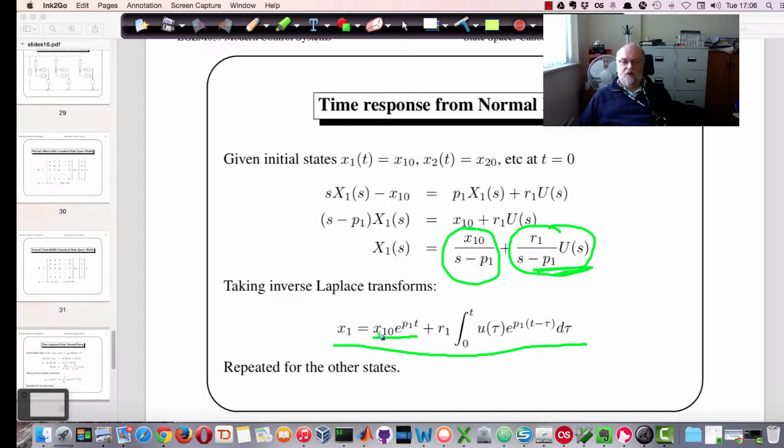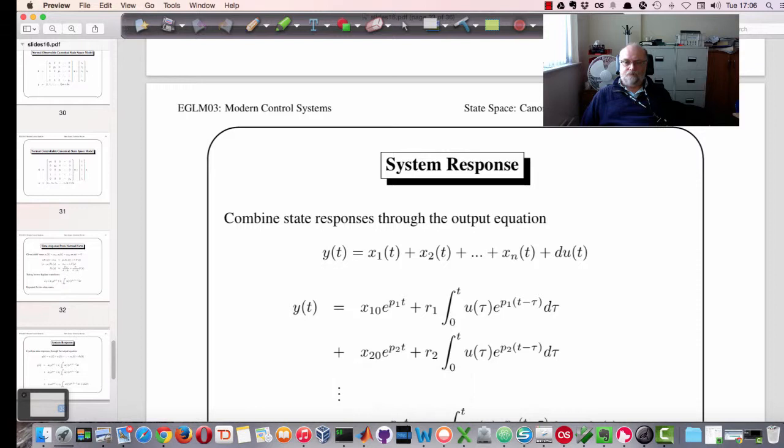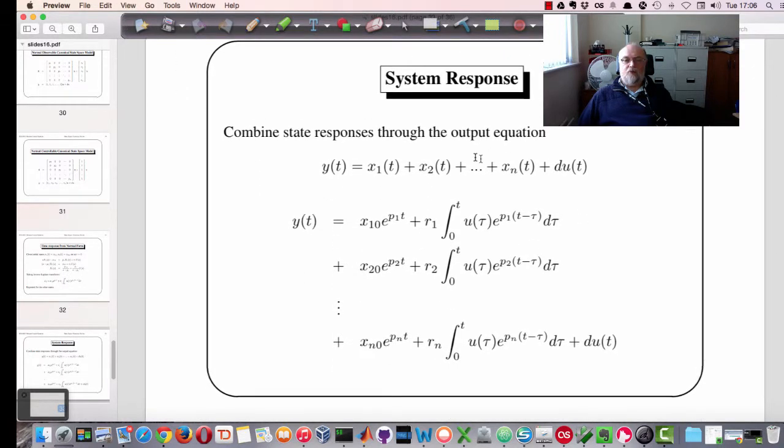And that would then be repeated for all the other states in the system. So the system response then is simply the sum of X1, X2, X3 and so on, plus D times the input if there's any direct connection. So we end up with n first order equations with some integrals we need to solve. But these are relatively easy to solve.